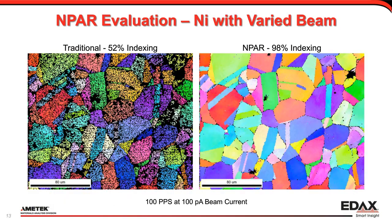Now let's go on to some more real-world examples. In this particular case, 100 patterns per second at 100 picoamps of beam current — pretty conservative by all metrics. Traditional indexing really didn't do a very good job; your eye picks out the grains but there's a lot of noise. By applying the NPAR routine, we get up to 98% indexing. Through the grains, you can see the central portions are very clean. Most of the remaining bad pixels are along boundaries, as could be expected, or due to pits or holes in the sample.